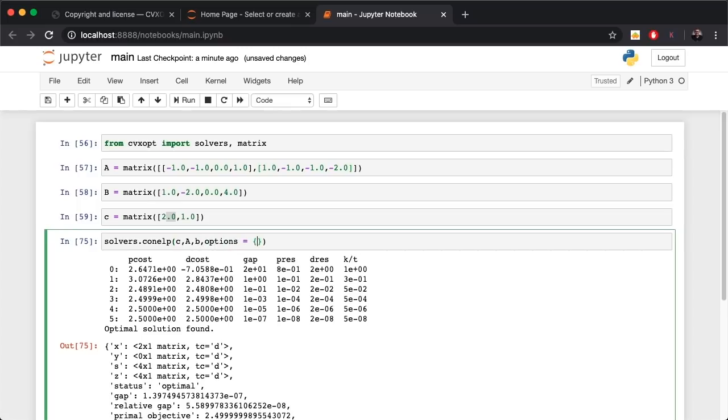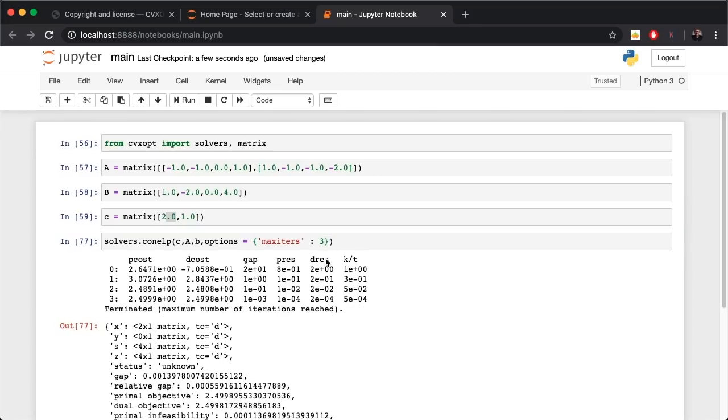If you want to control the number of iterations, for example the maximum number of iterations, then all you have to do is call options and pass for instance max_iters to 50. This is a dictionary key-value: the key is max_iters that stands for maximum number of iterations and the value is 50. Let's say I put 3, it terminates at 3 and tells you maximum number of iterations reached. Let's say 6, then optimal solution found.